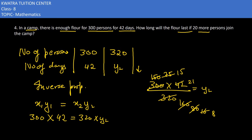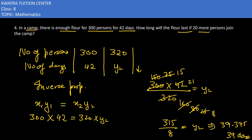Nothing else can be cancelled, so we calculate 15 × 21 = 315, then divide 315 by 8, giving approximately 39.375. Rounding off, the answer is approximately 39 days. So the food will last for about 39 days for 320 persons.